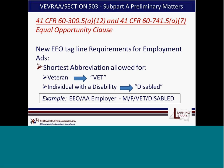In Section 503, there is a new EEO tagline requirement for job ads. The shortest abbreviation allowed for reference to veteran in the EEO tagline is VET, and the shortest abbreviation allowed for individual with a disability is the word DISABLED. You can expand on that — you can have a whole paragraph — but you cannot reference those protected classes using any shorter abbreviation. You are allowed to use the first initial for minority and female, but for veteran and disabled, you should not go any shorter than what is specified.